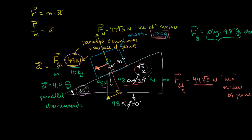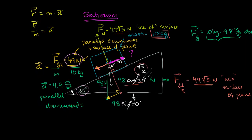So there must be some force counteracting the 49 newtons that wants to take the block down the slope — some force counteracting the component of gravity that wants to accelerate it down the ramp. What is this force? Think about the difference between a block of wood on wood versus ice on ice. Ice on ice is much more slippery — there's no friction between ice and ice, but there is friction between wood and wood. The force keeping this block from sliding down is the force of friction.